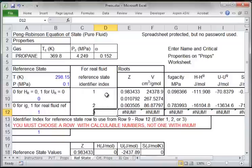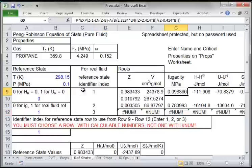These numbers here indicate the rows, and I want to choose the row with, of course, calculable numbers. And if I have multiple roots, in this case I want to choose the most stable root, and so in this case I would pick row identifier 1.